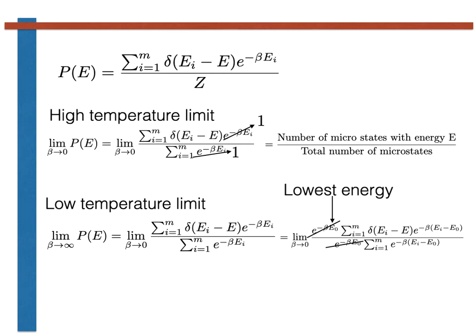Notice that the factors of e to the minus beta E0 from the numerator and denominator cancel. Now consider the exponential term that appears here and in the denominator. If Ei and E0 are equal, then this term will be equal to e to the 0, i.e. 1.